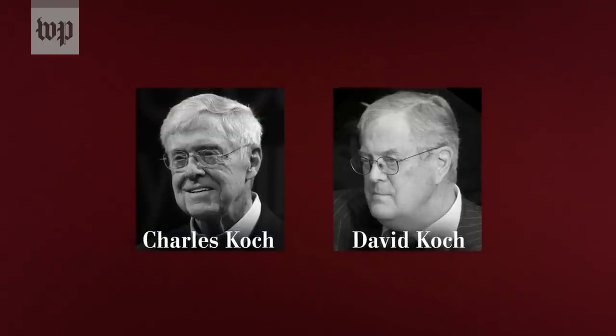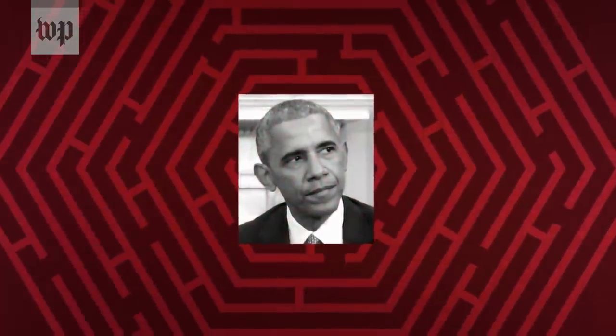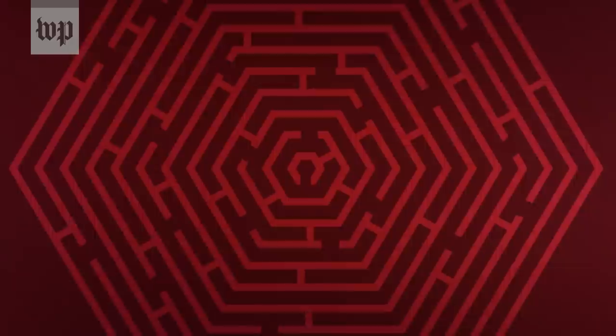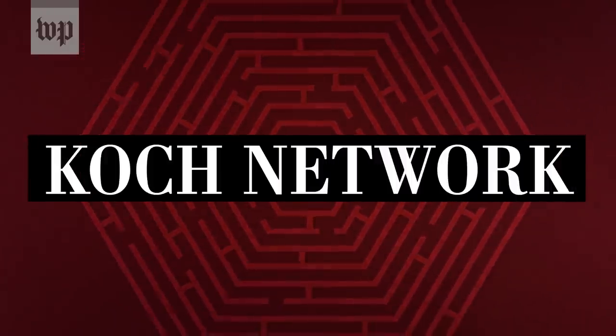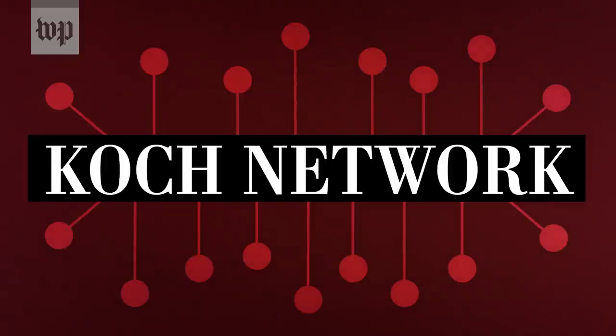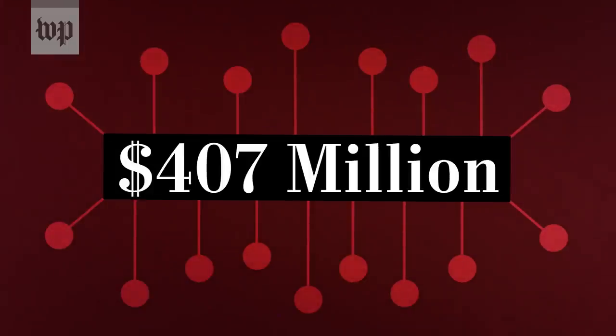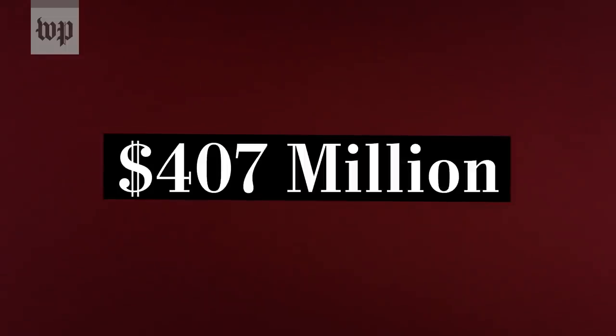The most well-known example of the power of undisclosed money is a network built by conservative billionaires Charles and David Koch. Over many years, the Koch brothers built a labyrinth of politically active nonprofits and LLCs, most of which went toward voter mobilization and into ads attacking former President Barack Obama and congressional Democrats, notably during the 2012 elections. In 2012, the 17 groups that made up the Koch network raised at least $407 million while masking the sources of those donations — equivalent to about four times the amount that Bernie Sanders raised in all of 2019 for his presidential campaign, which brought in more than a million donors.